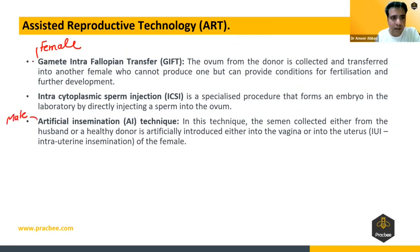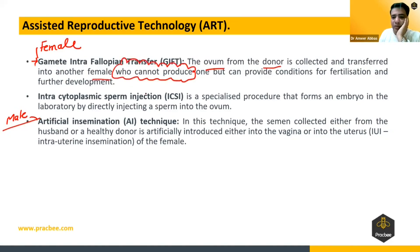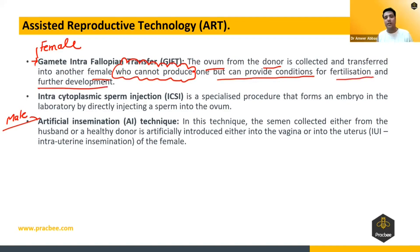When the female is incompetent, the technique used is GIFT — Gamete Intra Fallopian Transfer. The ovum from a donor is collected and transferred into the female who cannot produce her own ova but can provide the conditions for fertilization and further development.